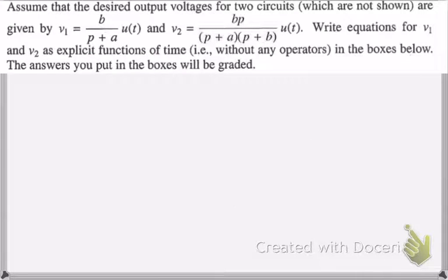So, if we read the question, it says, assume that the desired output voltage for two circuits, which are not shown, are given by V1 equaling B over P plus A times U of T, which is the step response with a low-pass operator, and V2 equaling BP over P plus A times P plus B times the unit step function, which is the function we'll be examining today.